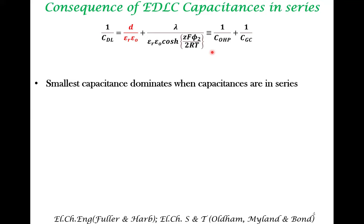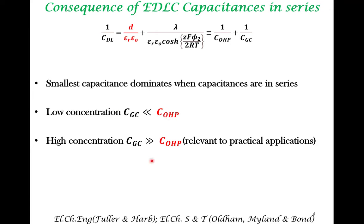Let's look at the behavior predicted by the Stern model. When capacitances are in series, the smallest capacitance dominates. At low concentration, the Gouy-Chapman capacitance is less than the Helmholtz capacitance. At high concentration, which is the regime relevant to practical applications, the Helmholtz capacitance is less than the Gouy-Chapman capacitance. All these features must be accounted for through the series capacitance behavior.